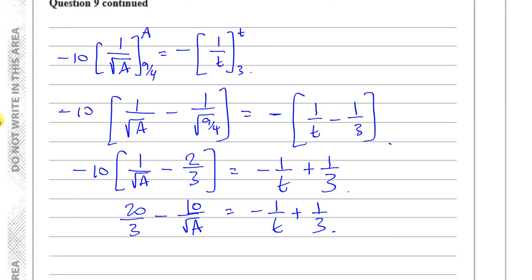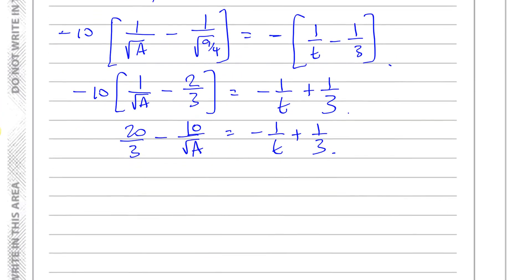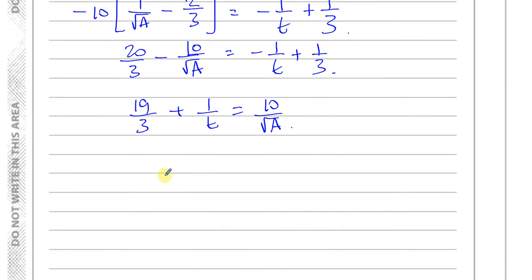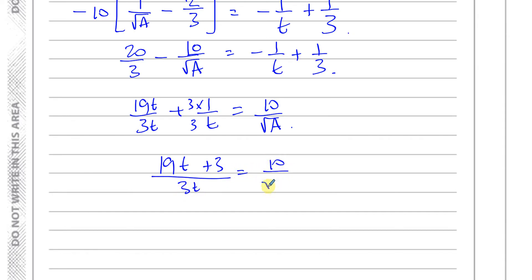Expanding: −10/√A + 20/3 equals −1/t + 1/3. Isolating the A term: bring everything else to the other side — 20/3 − 1/3 + 1/t = 10/√A, giving 19/3 + 1/t = 10/√A. Combining into one fraction: (19t + 3) / 3t = 10/√A.